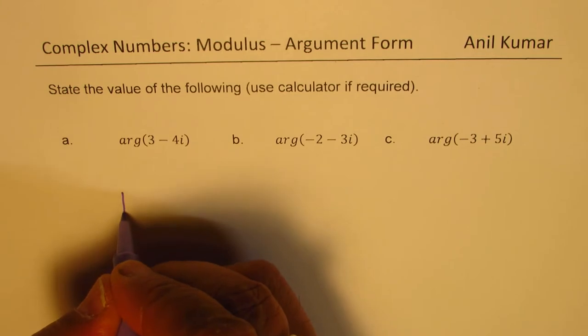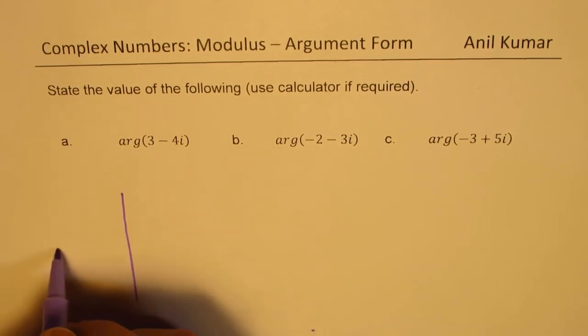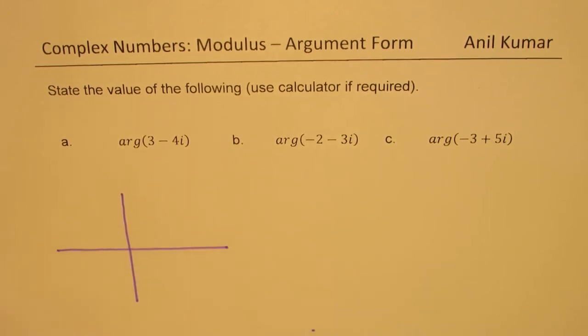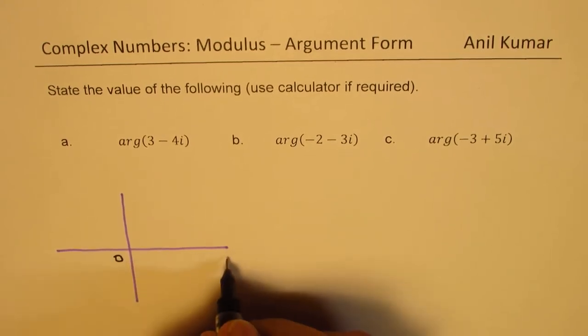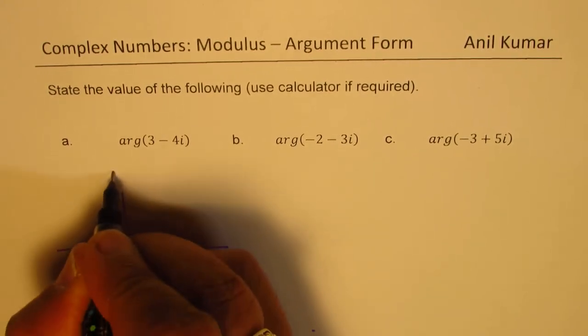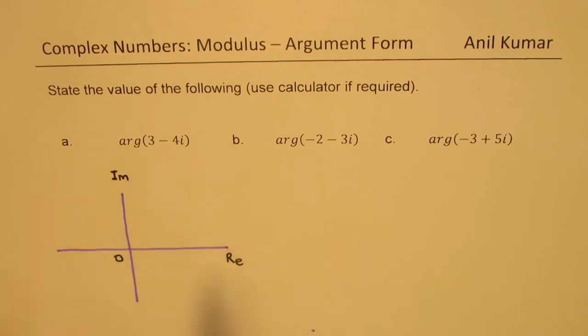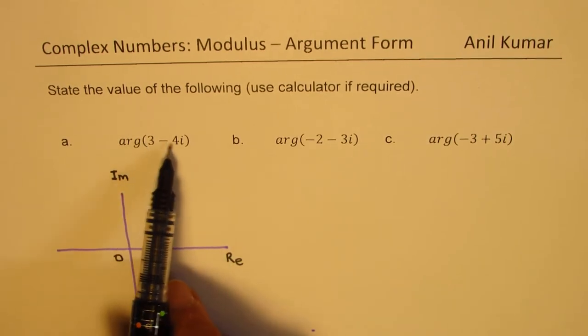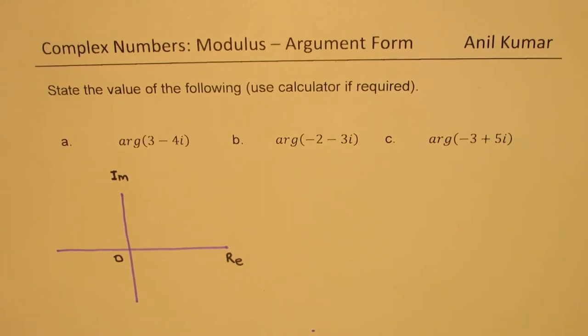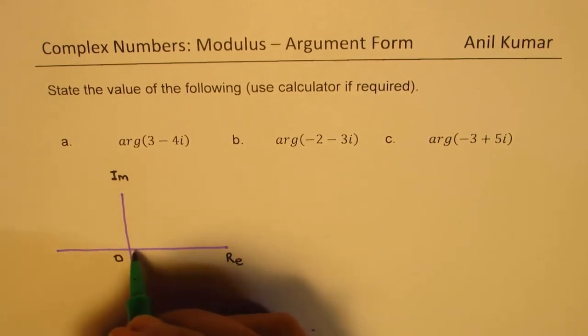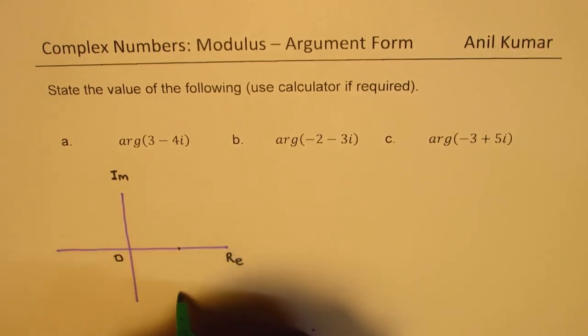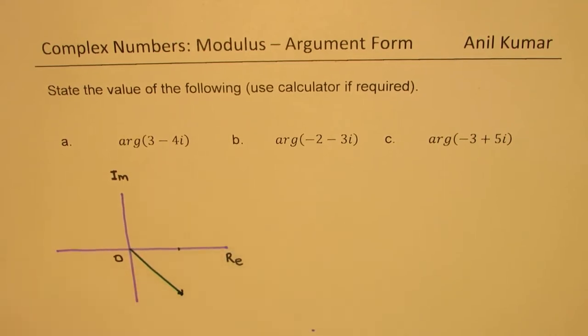Now let us first sketch the diagram to place it on the Argand chart. Now here we have 0. That is the real axis. This is the imaginary axis. We are looking for 3 minus 4i. So 3 minus 4i means we could be 3 units here and 4 down. So somewhere like this. So that position gives you 3 minus 4i.